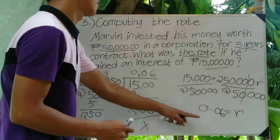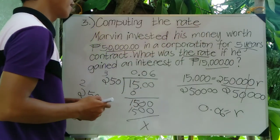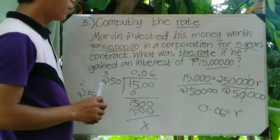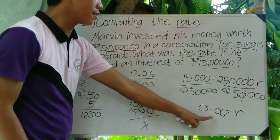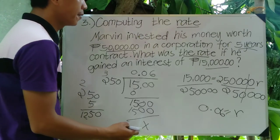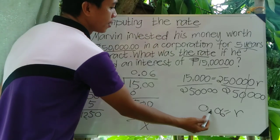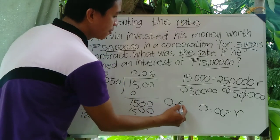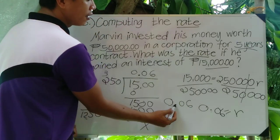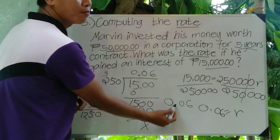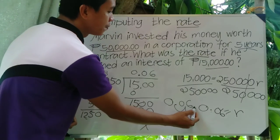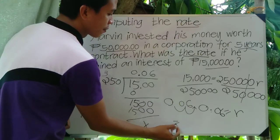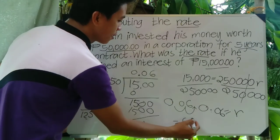The value of R is 0.06. Since R is a rate, it must be presented in percent form. To convert 0.06 to percent, move the decimal two places to the right: one, two — giving the whole number 6. So R equals 6 percent.